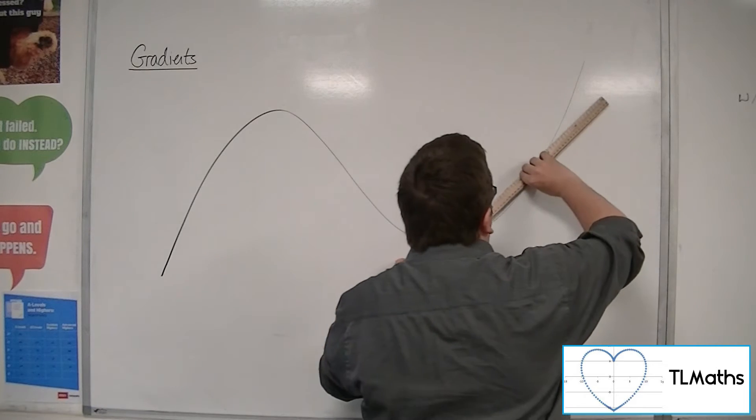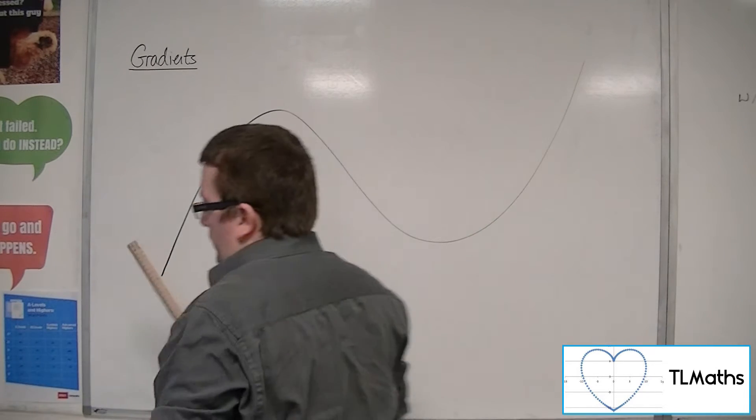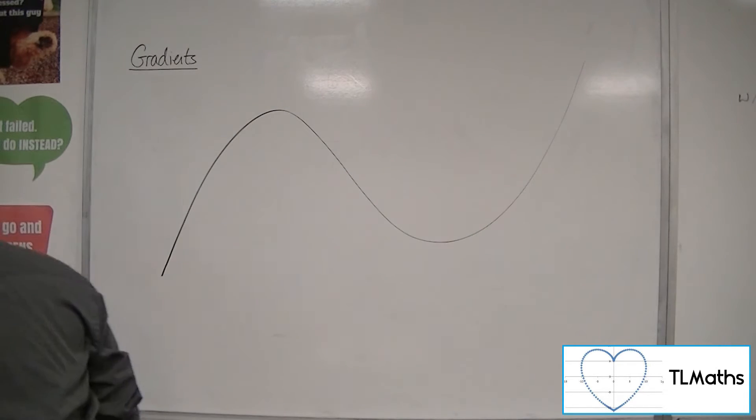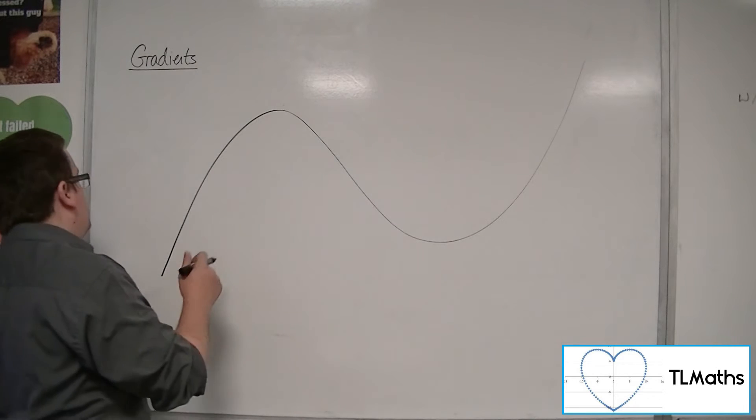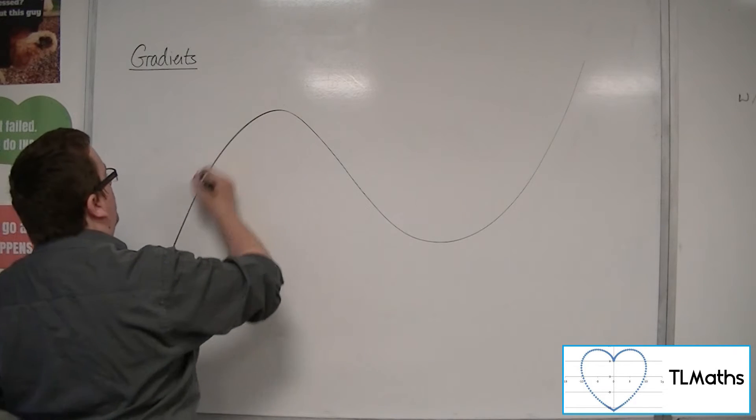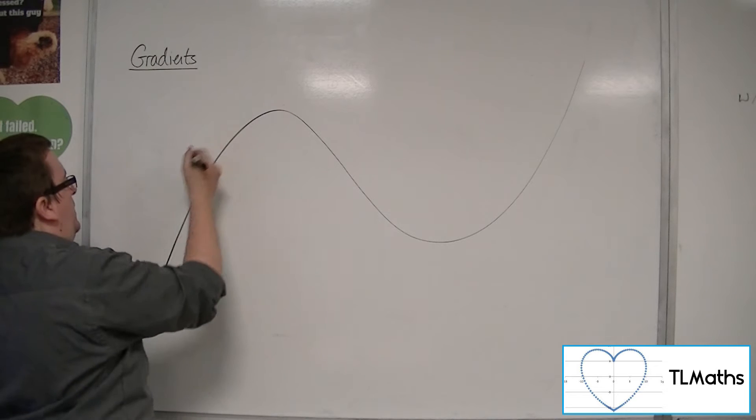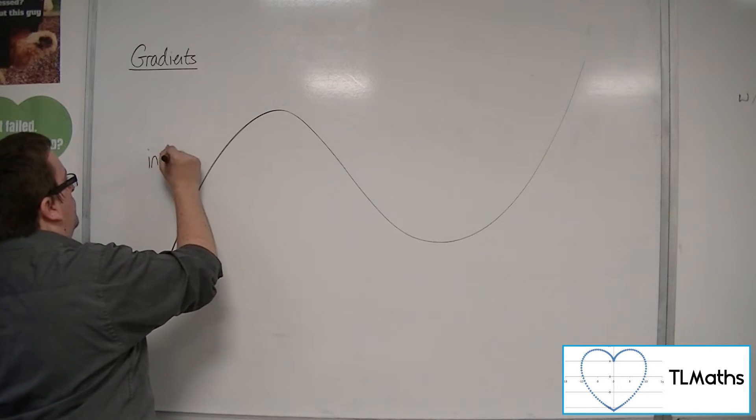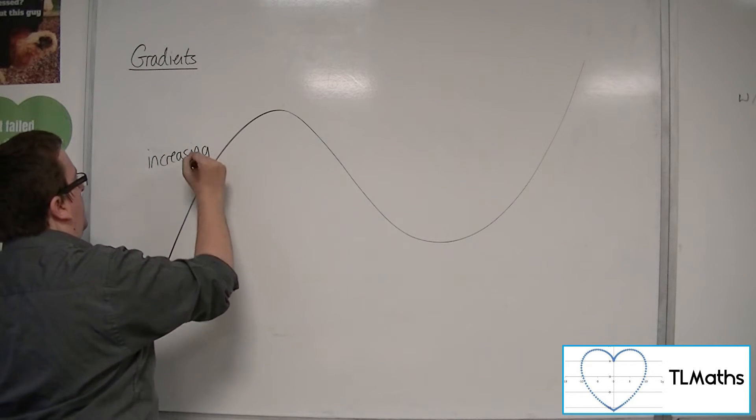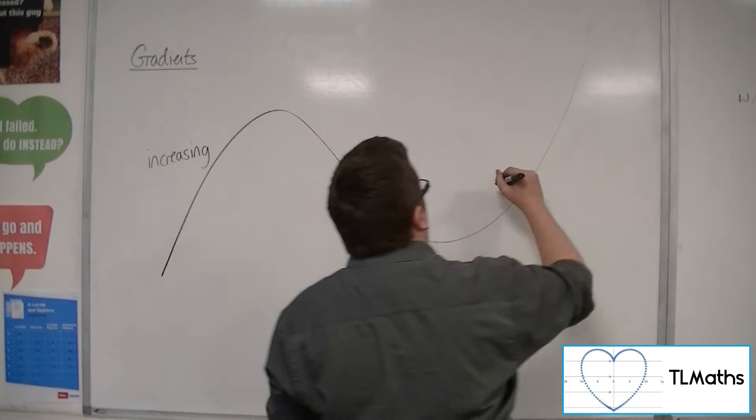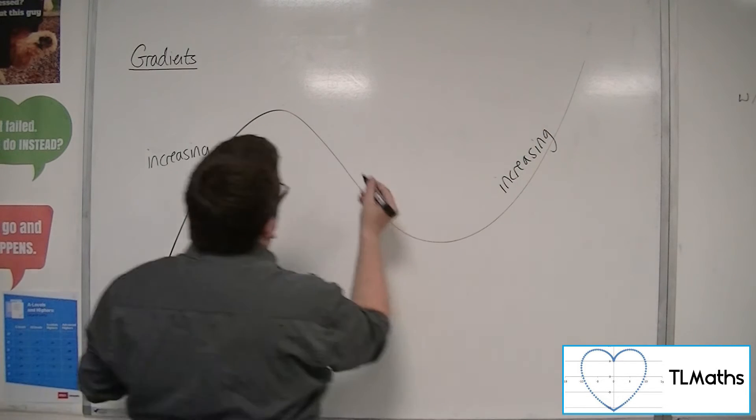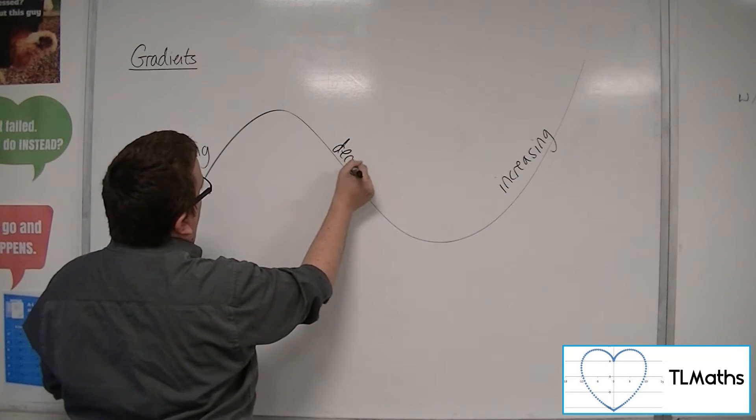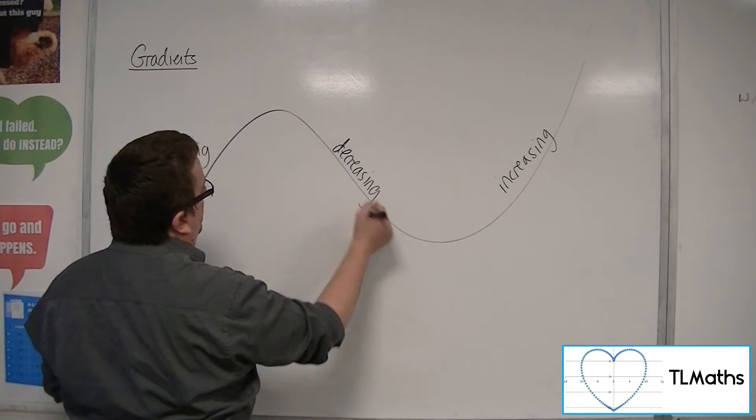And then I keep going and I'm back to positive again. So we have these points on the curve where the curve is increasing, and it was increasing here, wasn't it? And it was decreasing here, and it's decreasing here, between those two points.